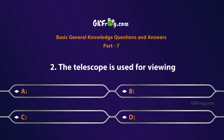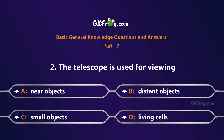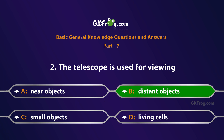The telescope is used for viewing: A. Near objects, B. Distant objects, C. Small objects, D. Living cells. Correct answer is B. Distant objects.